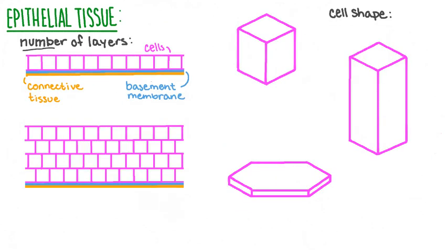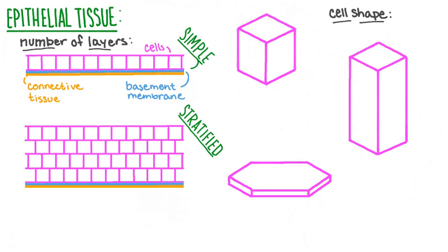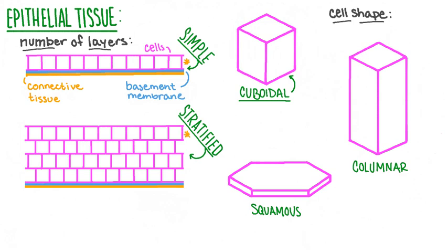Epithelial tissue is characterized by the number of layers it possesses and the shape of the cells in the outermost layer. Epithelial cells are attached to a basement membrane, underneath which you find connective tissue. Epithelial tissue with only one layer of cells is called simple epithelial tissue; with multiple layers it is called stratified epithelium. If the cells in the outermost layer are roughly square-shaped, it is called cuboidal epithelium. These descriptions combine into names such as simple cuboidal or stratified cuboidal tissue.